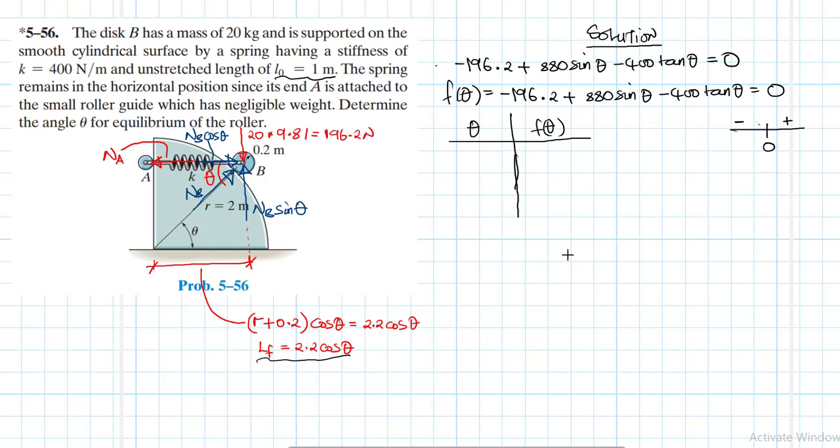For trig functions, usually you'll have more than one solution. So to check that, plug in zero into the function and you get 196.2. Plug in 30 degrees, you get 12.86. Plug in 45 degrees, you get minus 26.95. Plug in 60 degrees, you get minus 126.2.